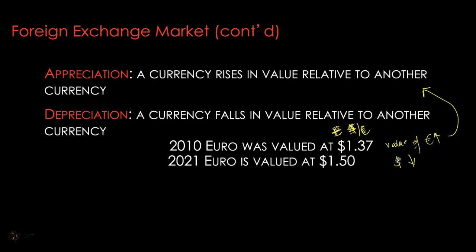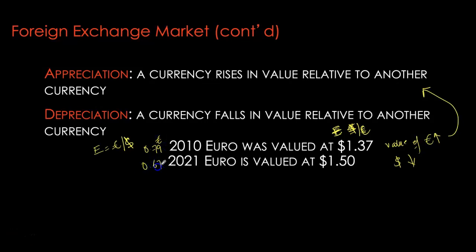Whenever one currency appreciates, the other is going to necessarily depreciate. We can also express the exchange rate in the alternative format — euros per Canadian dollar — meaning how many euros can we buy with one Canadian dollar. To find the alternative exchange rate, we simply take the inverse of these numbers. So the exchange rate for the Canadian dollar in 2010 becomes 0.79 euros, and for 2021 it's about 0.67 euros. With the same Canadian dollar we are actually getting fewer euros, so the Canadian dollar is losing value. Either way, the conclusion is the same: the euro has gained value and the Canadian dollar has lost value.